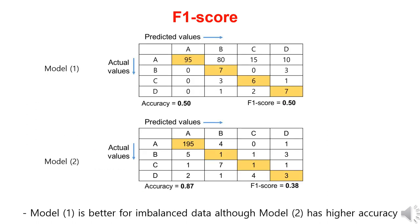Therefore, when applying accuracy and F1 score to the two models, we can observe that model 2 has a higher accuracy of 0.87, but model 1 has a higher F1 score of 0.5. As mentioned earlier, model 2 predicts only class A, while model 1 predicts reasonably well for classes B, C, and D as well. This is why model 1 has a higher F1 score. Consequently, for balanced data sets where the class distribution is similar, accuracy can be used as an evaluation metric. On the other hand, for imbalanced data sets, F1 score can be a suitable evaluation metric.